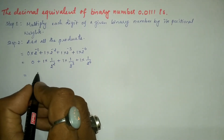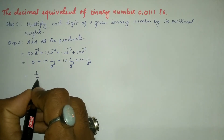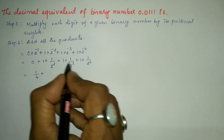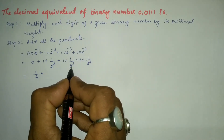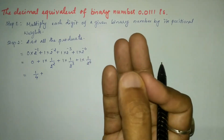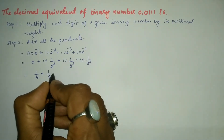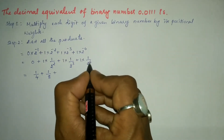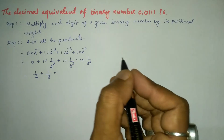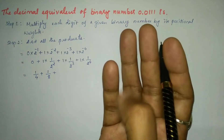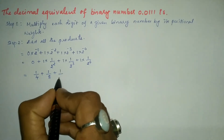Simplifying further: 1 divided by 2 to the power 2 is 1 divided by 4. Then 1 divided by 2 to the power 3 means 2 multiplied 3 times — 2, 4, 8 — so that is 1 divided by 8. And 1 divided by 2 to the power 4 means 2 multiplied 4 times — 2, 4, 8, 16 — giving us 1 divided by 16.